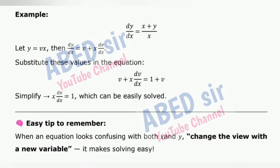Example: dy/dx = (x+y)/x. Let y = vx, then dy/dx = v + x·dv/dx. Substitute these values in the equation: v + x·dv/dx = 1 + v. Simplify: x·dv/dx = 1, which can be easily solved. Easy tip to remember: when an equation looks confusing with both x and y, change the view with a new variable — it makes solving easy.